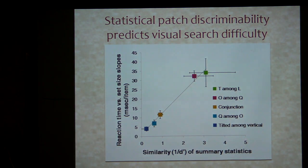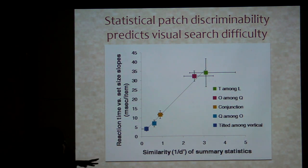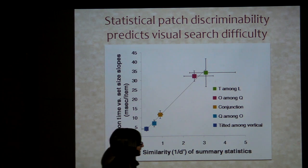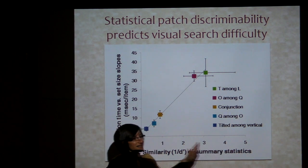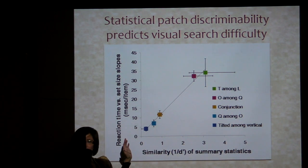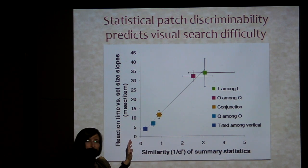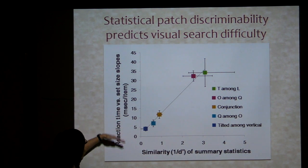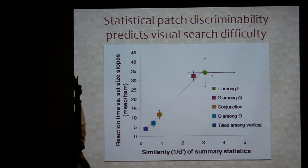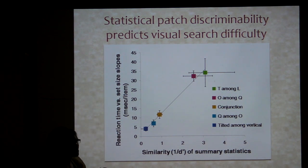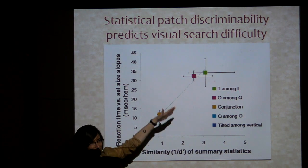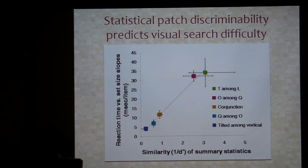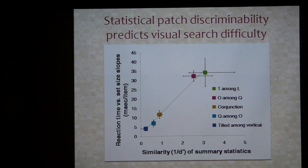If you do all this — this axis is how well you do the task with the summary statistics, and this axis is how well you do on search — it's a nice fit. Suggestions that you can do the search stuff.